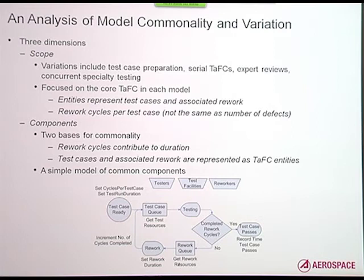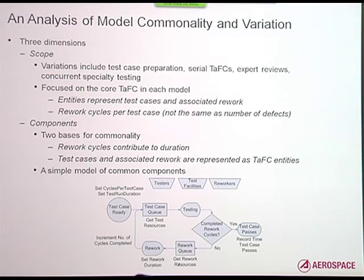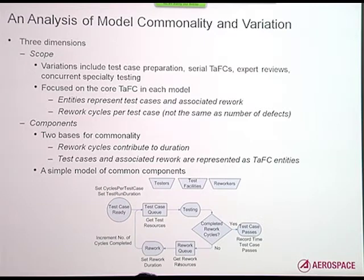With the six projects, we analyzed the commonality and variation between the six models to come up with a generalizable model. There were three dimensions we focused on. First, the scope — because everybody has a different process. Some have multiple rework cycles and reviews in between. We ended up focusing on just one rework cycle, because typically there's one dominant cycle that's going to push everything else out. The real work is in the components — the resources, the steps, and the parameters.